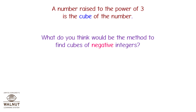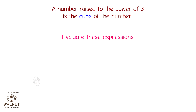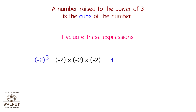What do you think would be the method to find cubes of negative integers? The method remains the same — just keep the rules of multiplication in mind. Evaluate these expressions. Minus 2 cube is equal to minus 2 into minus 2 into minus 2. So first, minus 2 into minus 2 is equal to plus 4, and plus 4 into minus 2 is equal to minus 8. Therefore, minus 2 cube is equal to minus 8.